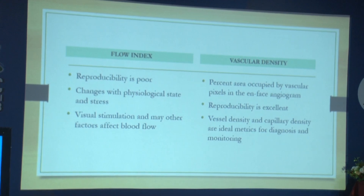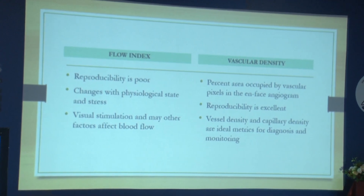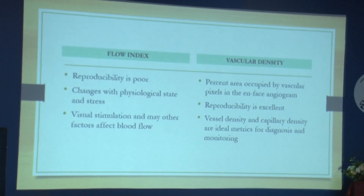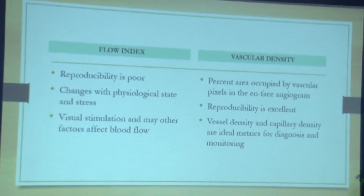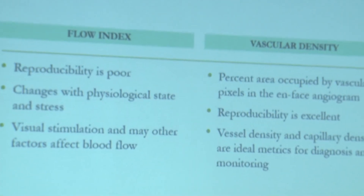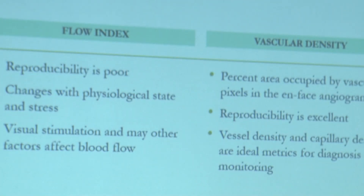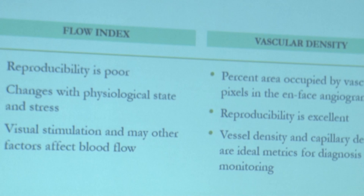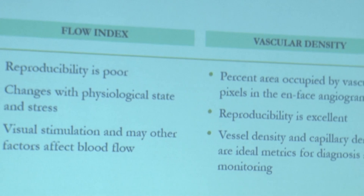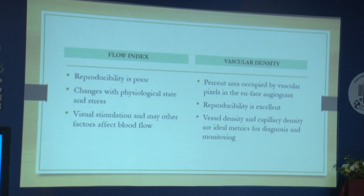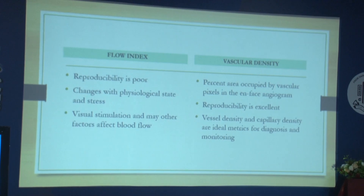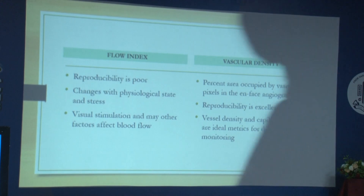We generally don't use flow index much in glaucoma because its reproducibility is poor, and it changes with physiological state — for instance, if a person goes for a run and then takes an OCT angio, the flow index will be significantly increased. Vascular density is much more specific for glaucoma; it is the percentage of area occupied by vascular pixels on the en-face angiogram, with better reproducibility, and it is used for diagnosis and monitoring.